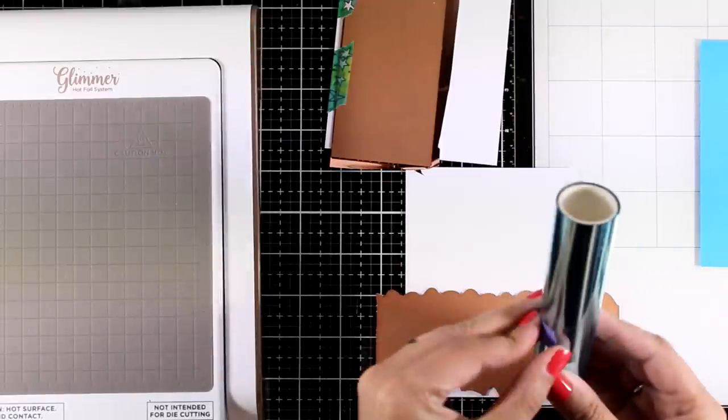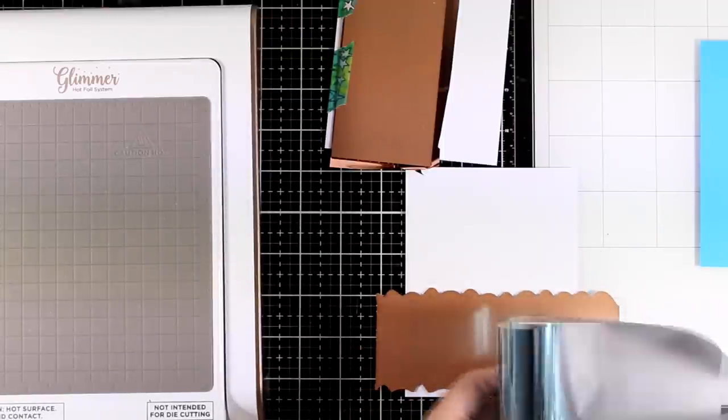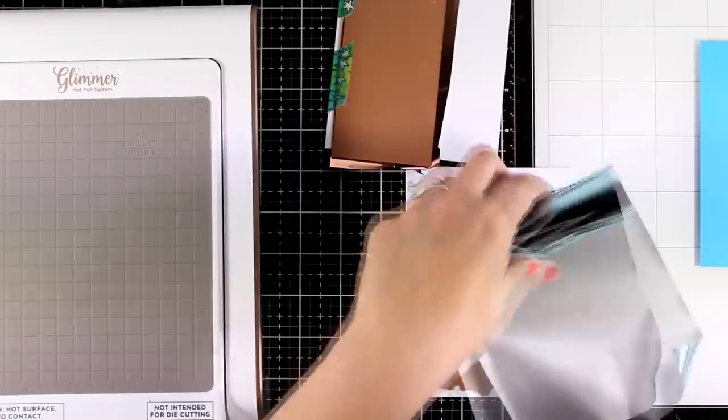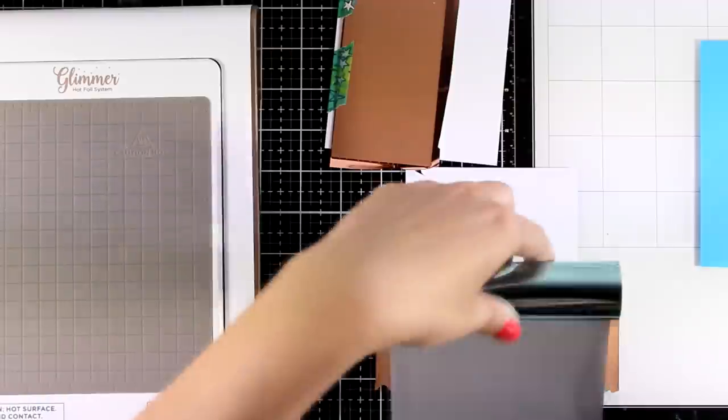Now as you can see you can place it vertically or horizontally and I'm going to do both styles with this plate so you can see the look. Now for this one I'm going with that beautiful blue foil roll on top of white again.